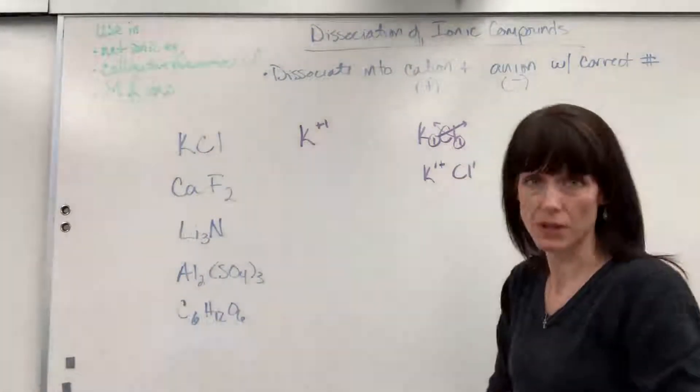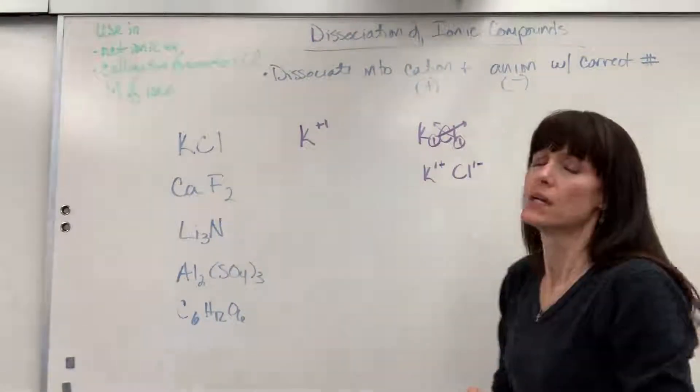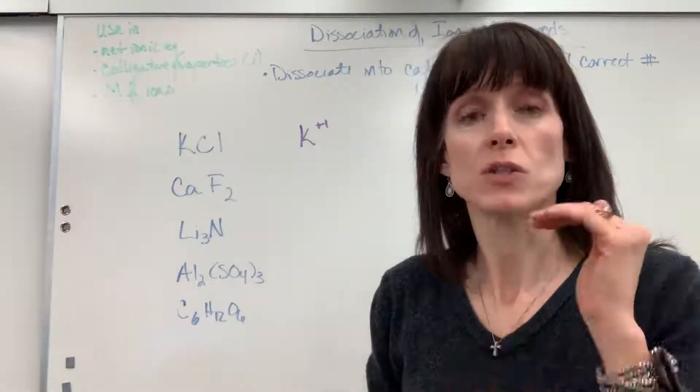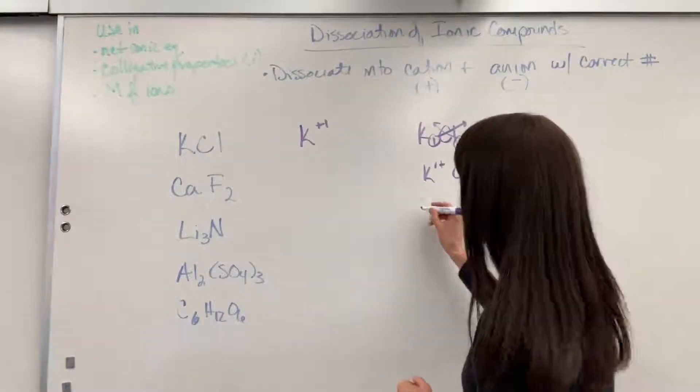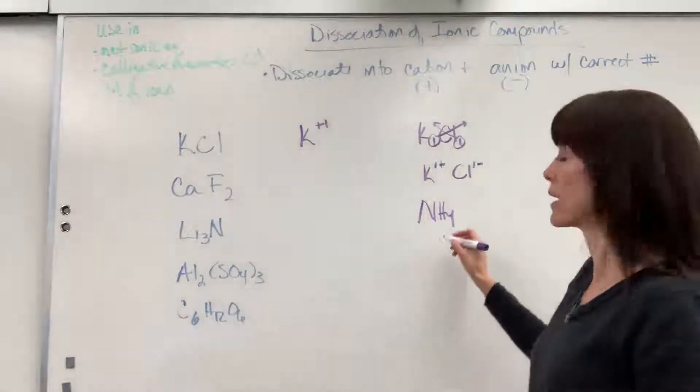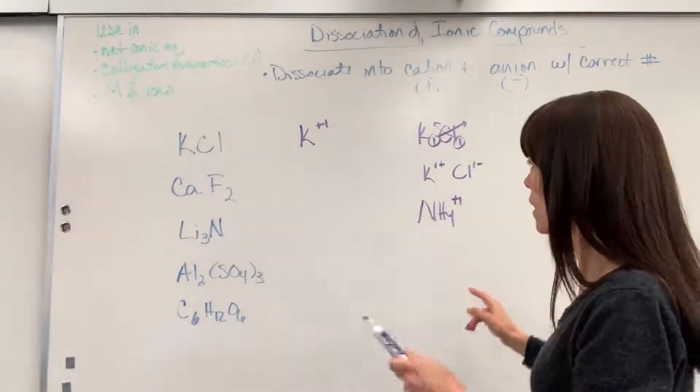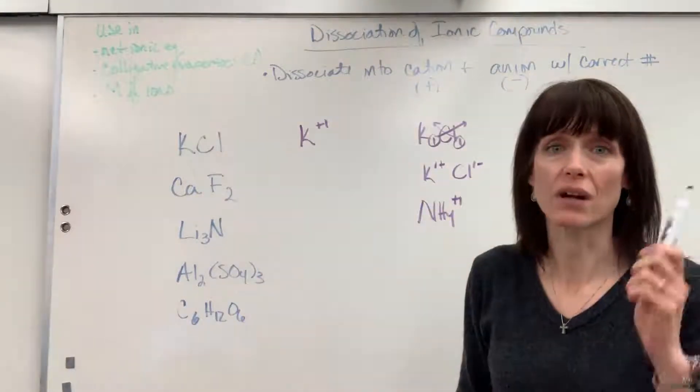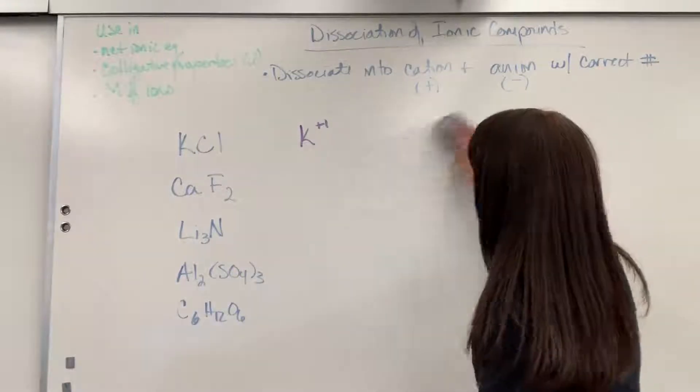The cation is always written first, that true metal, and the anion is always written second. Now a little disclaimer. I said the metals are always written first. There's one cation that's not a metal. It's a polyatomic and that would be ammonia. You just need to have that memorized. That ammonia is a plus one cation. Otherwise, cations will always be metal and the cations are always written first. It's just our convention, the way that we write it.